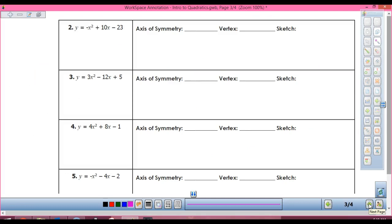So, in number 2, what is my A? My A is negative 1. My B is 10. And my C is negative 23. So, axis of symmetry, x equals negative 10 - that's the opposite of B - divided by 2 times negative 1. So, this gives us positive 5. So, my axis of symmetry is x equals 5.